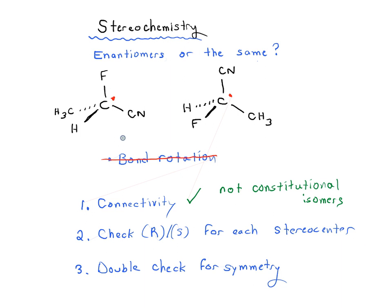So they have the same connectivity. Remember that stereoisomers have different arrangements in space, and that's what we're going to do next. We're going to check R and S for each stereocenter. This carbon in the middle - we're going to first examine the four atoms attached to this carbon: fluorine, carbon, hydrogen, carbon.